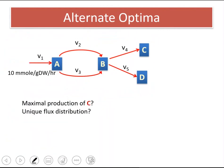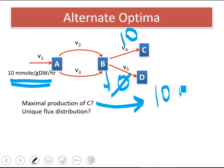So if there is 10 units of A coming in, 10 units of B will be formed. And if you want C to be maximum, this 10 units of carbon will go to C and 0 will go to D. So maximum production of C is also 10 millimole per gram dry weight per hour.